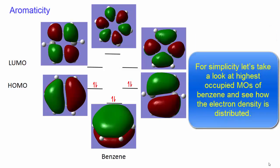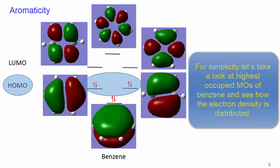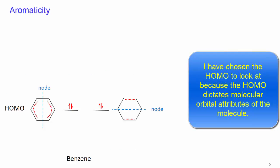For simplicity, let's take a look at the highest occupied molecular orbitals of benzene and see how the electron density is distributed. I have chosen the highest occupied molecular orbital because the HOMO dictates molecular orbital attributes of the molecule.